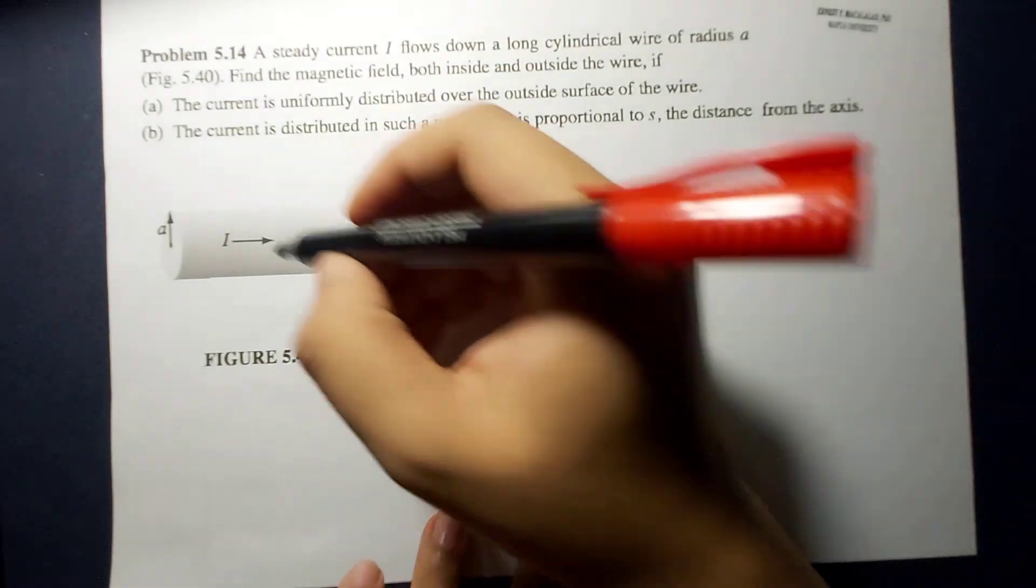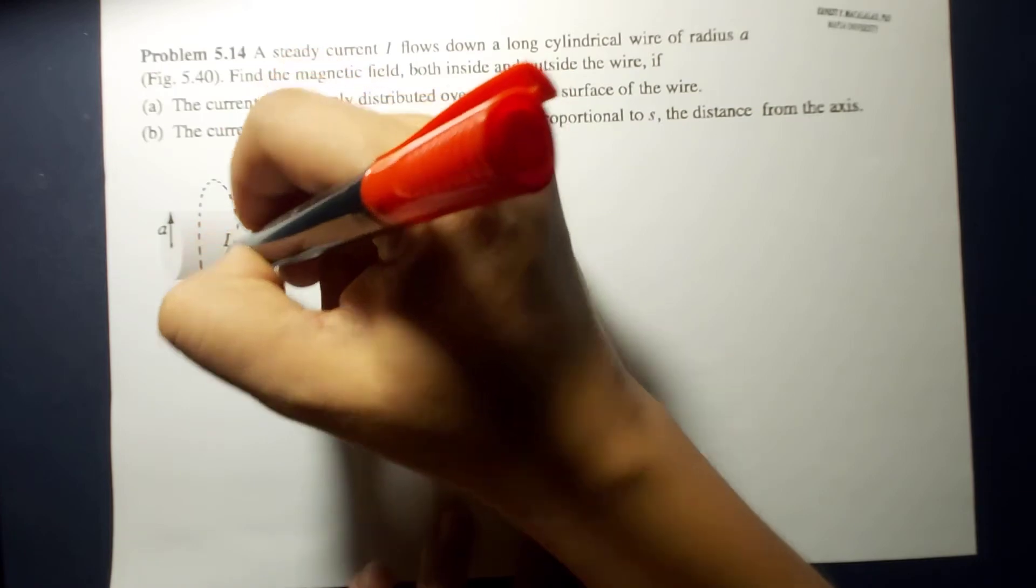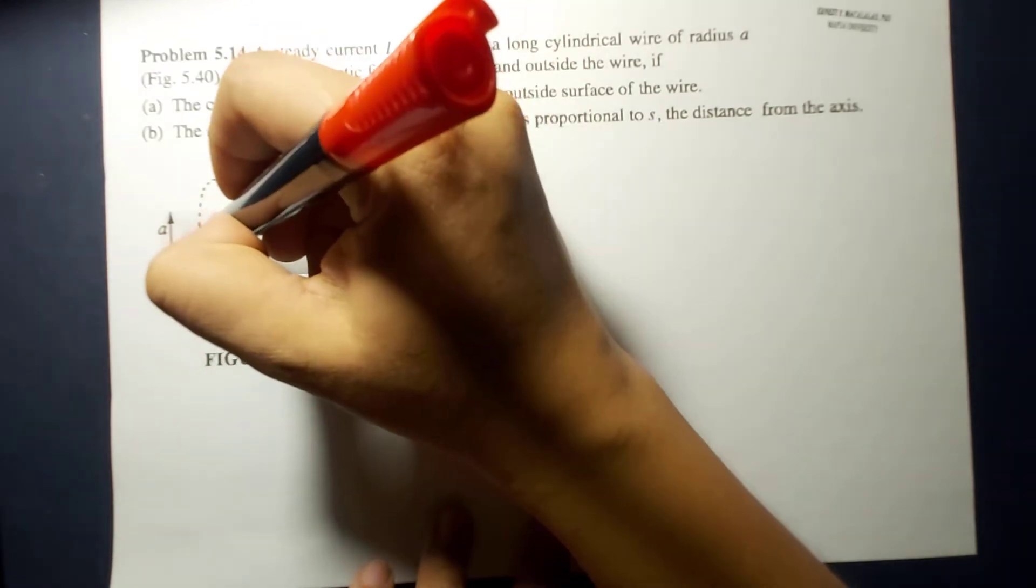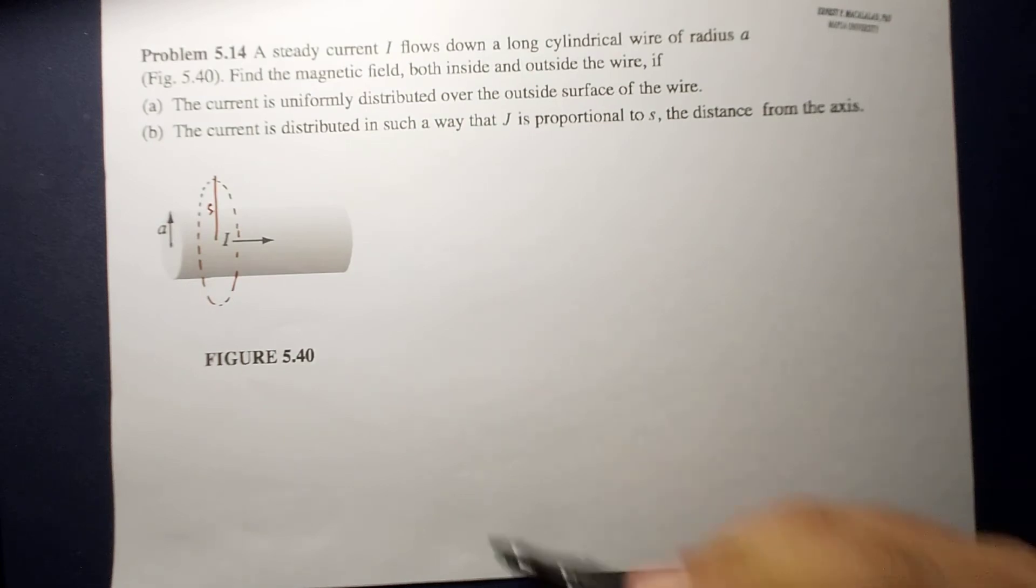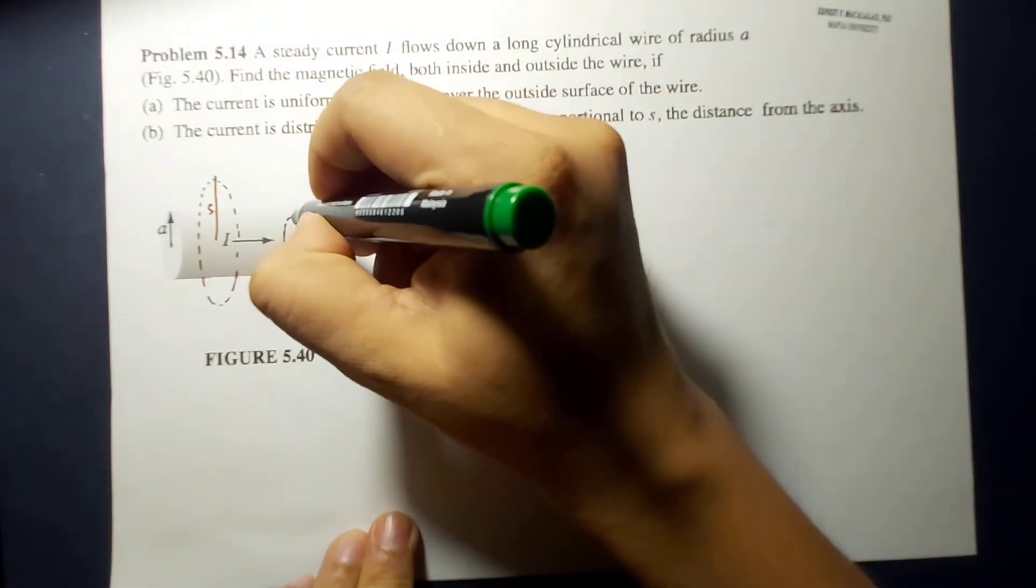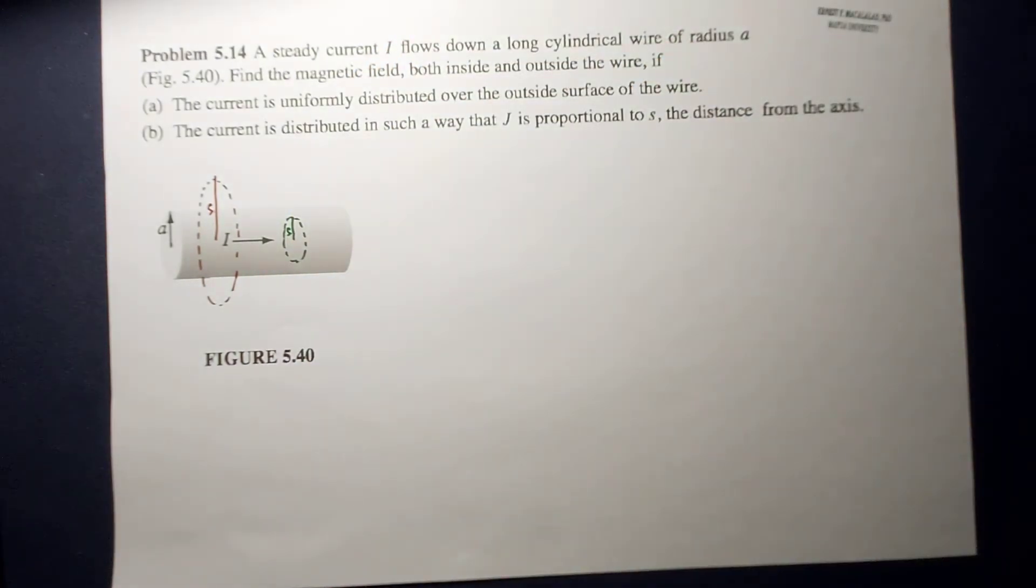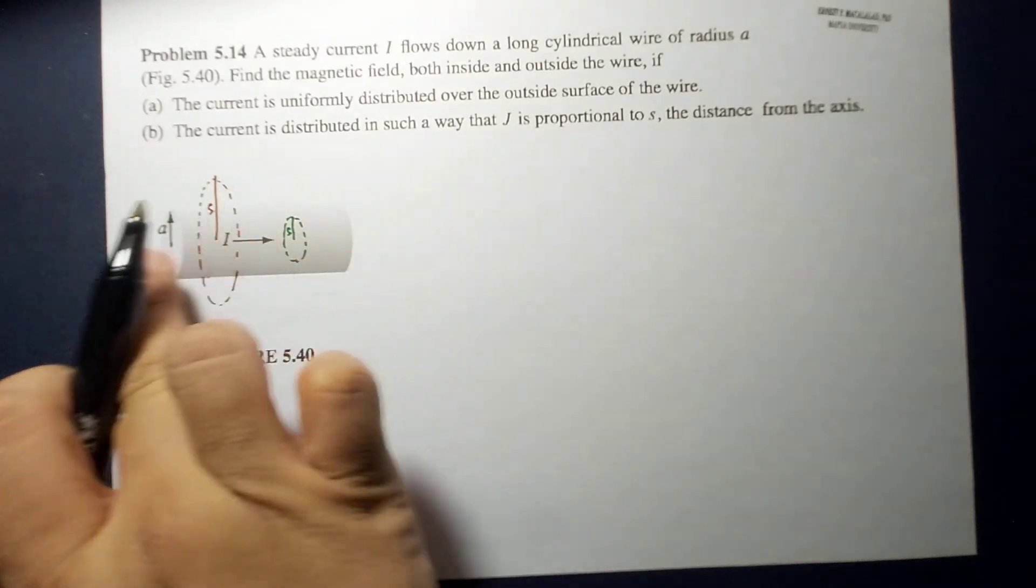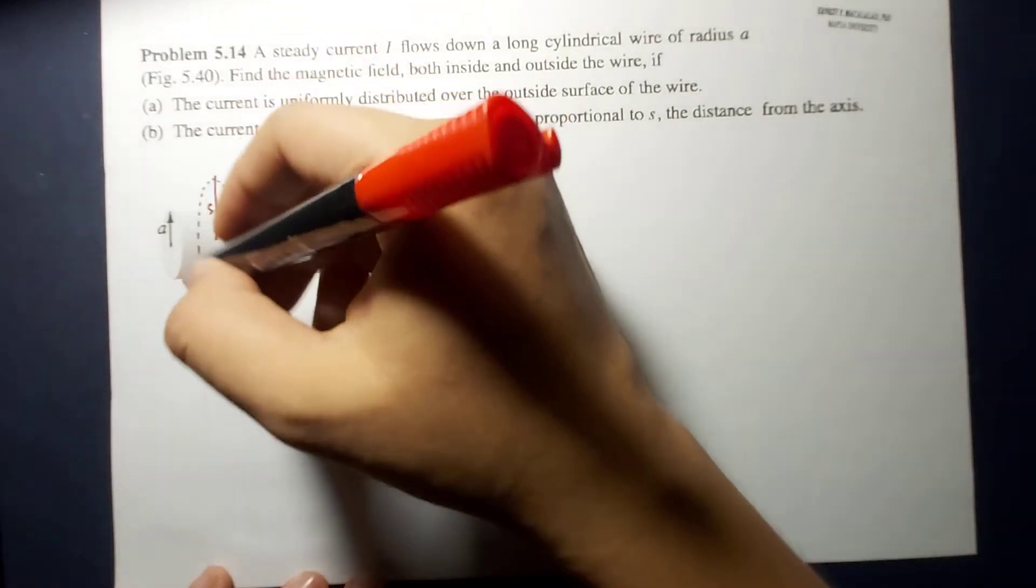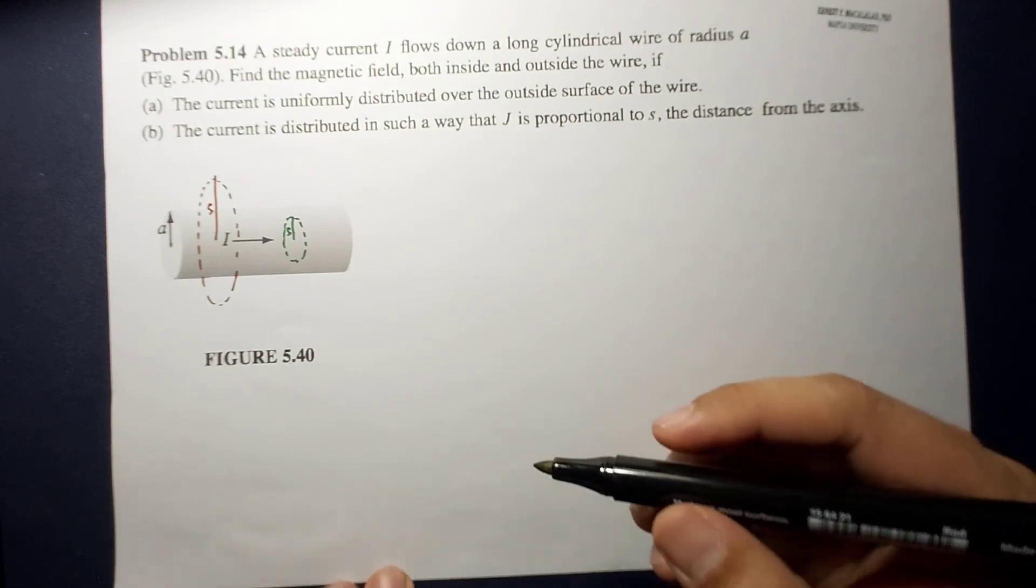The first Amperian loop is the Amperian loop that will cover the outside. So this is your S. And the second Amperian loop will be the Amperian loop inside. So you will notice that, this Amperian loop, if we're going to look at the side, or into this view,